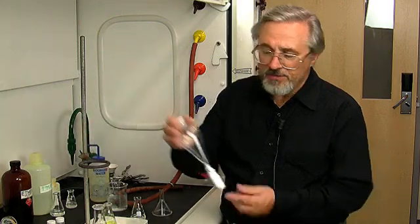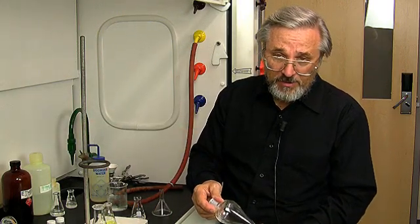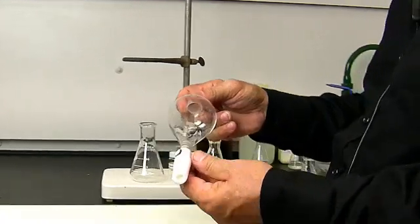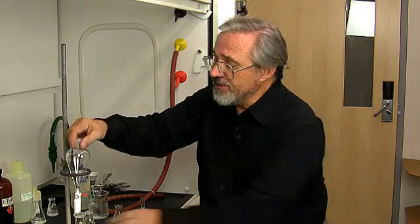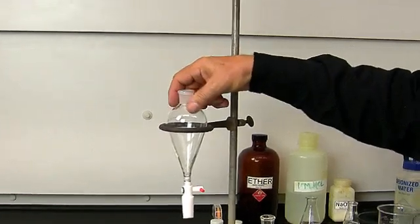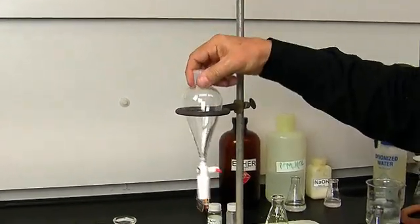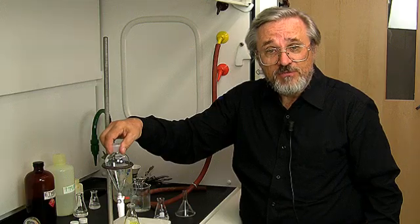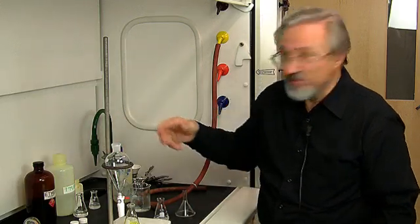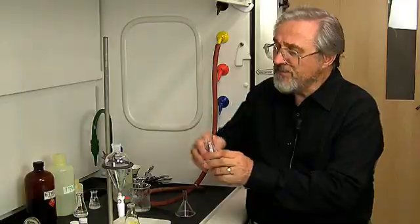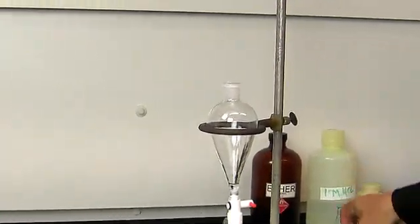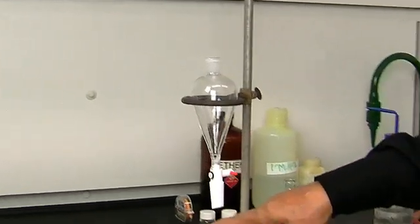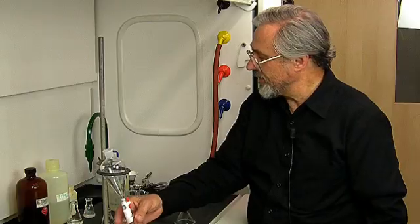We're going to be using a separatory funnel. The first thing you should do before you do any extraction in a separatory funnel is to test to make sure it doesn't leak. Here's our ring, and we've also chosen a ring that's small enough to hold this, but not to have the funnel fall through. That, of course, would be tragic. We're going to take some more diethyl ether, and we're going to put it in here just a little bit, and we can see that there's no dribbling of diethyl ether down through the tip of the funnel.